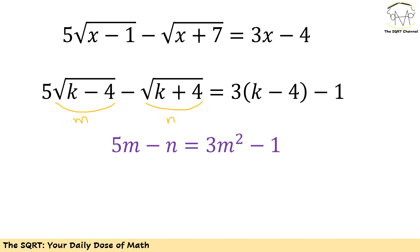Now I'm going to use another replacement. I'll use m for radical(k minus 4) and n for radical(k plus 4). You'll realize the reason as we continue. But first let's simplify the equation in terms of m and n.